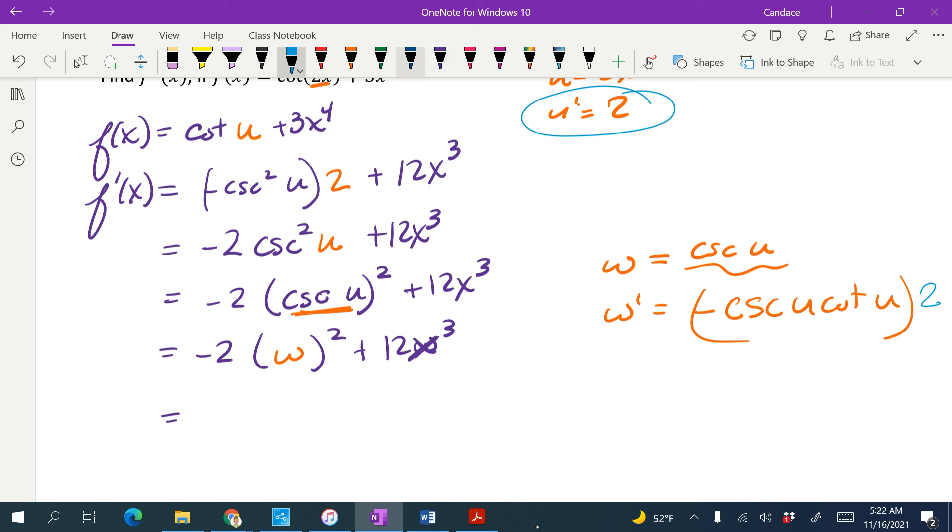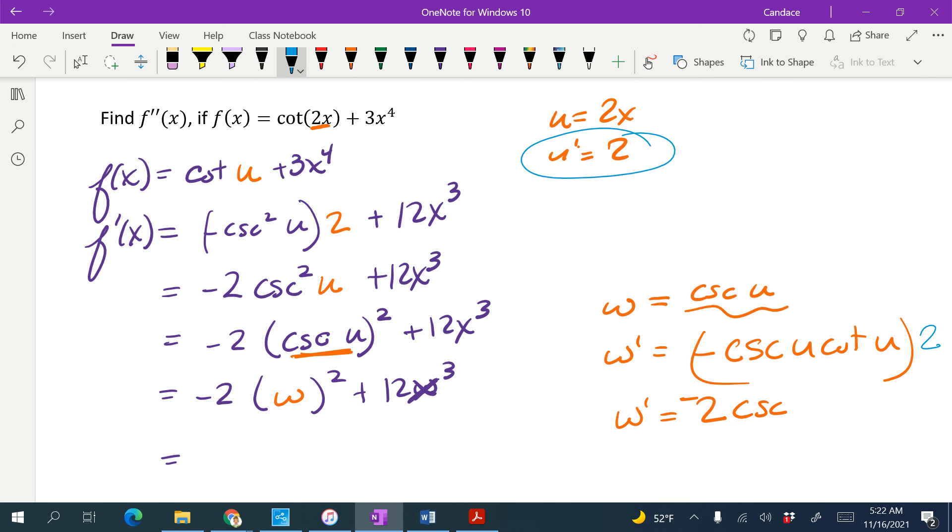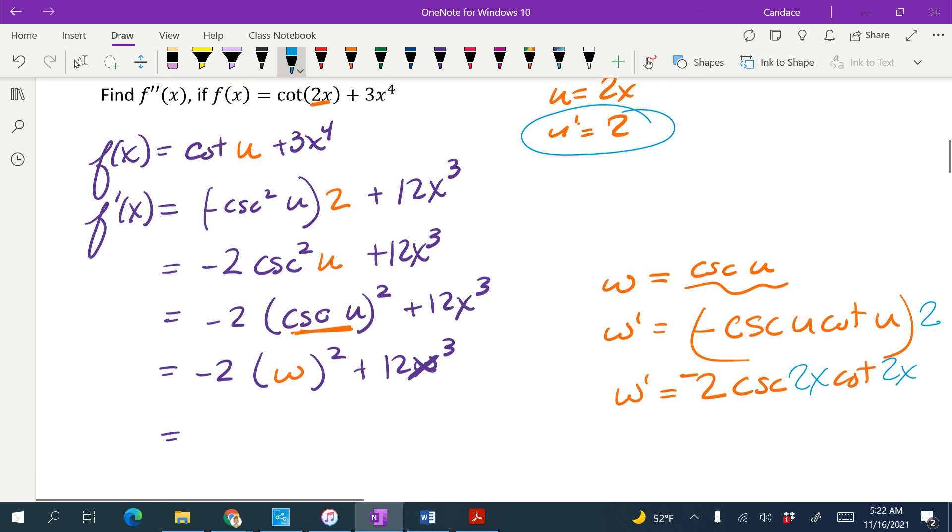I'm going to go ahead and replace my u in there, so that way we're ready. So we've got negative 2 cosecant, the u was a 2x, and then cotangent of 2x.